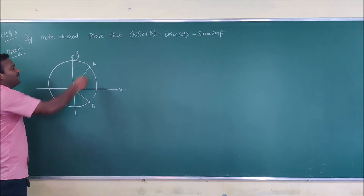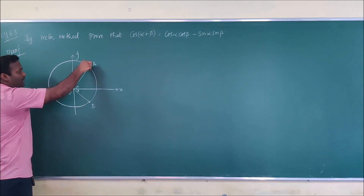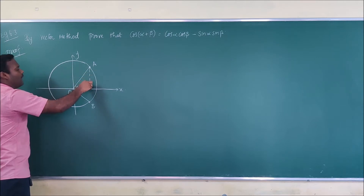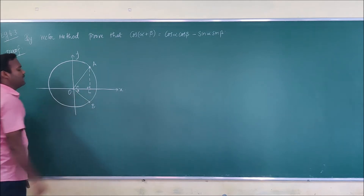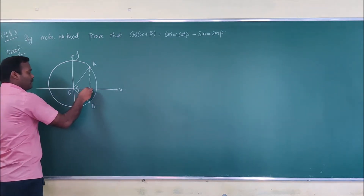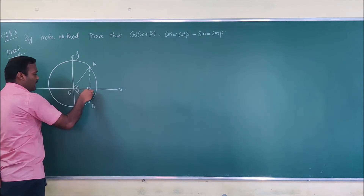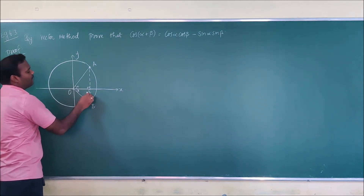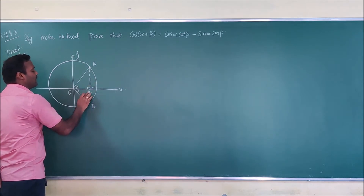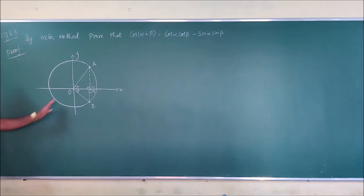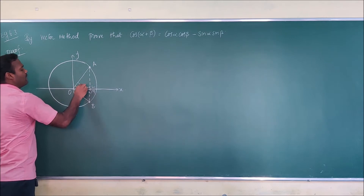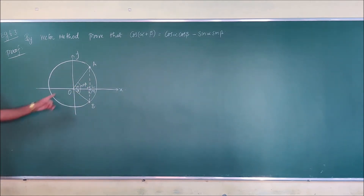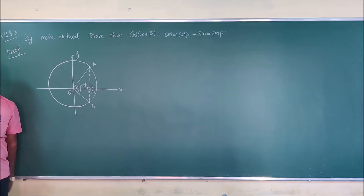Next, we are going to construct a perpendicular line from point A to the x-axis — this foot of perpendicular is taken as point L. We also construct another line perpendicular to the x-axis from point B, and that foot is taken as point M. The angle between OA and OB is nothing but α + β.